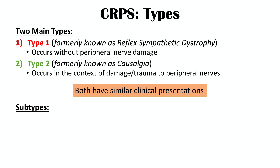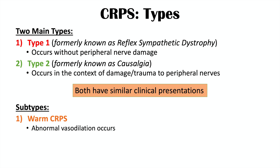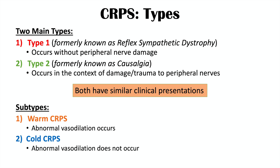There are also two subtypes: warm complex regional pain syndrome, where abnormal vasodilation occurs, and cold complex regional pain syndrome, where abnormal vasodilation does not occur. These subtypes may appear in the literature, but the main points to take away are the two main types, type 1 and type 2.